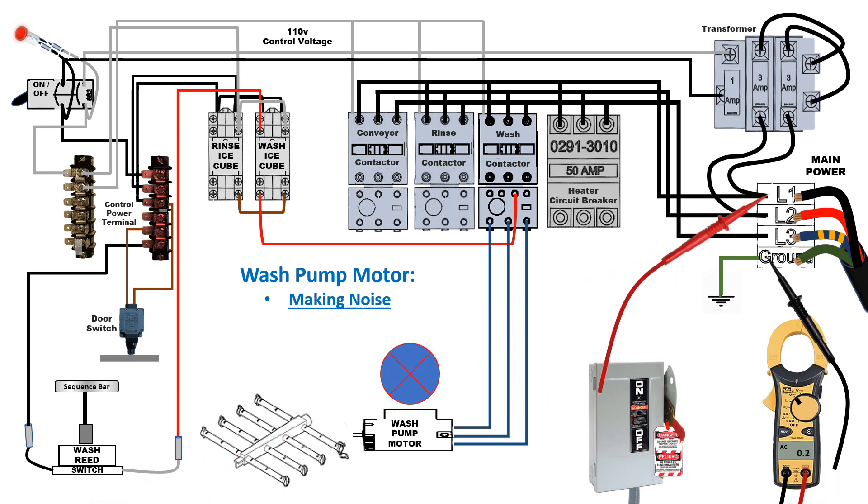Here again, using our multimeter set to AC voltage, one meter lead to ground, we test L1, L2, and L3 at the main power terminal to verify there is no power coming into the machine.